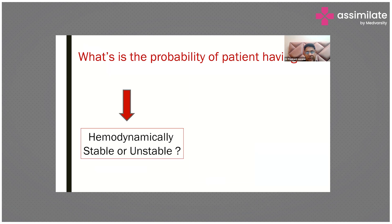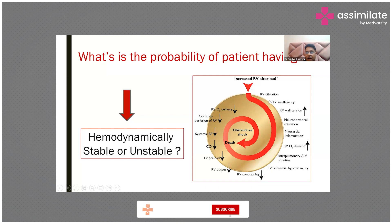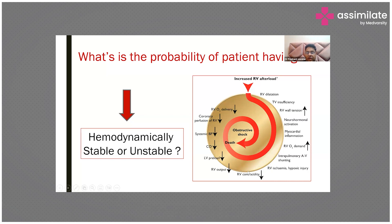If you look at this diagram, once there is an embolism or clot in the pulmonary artery, there is increased right ventricular afterload, which leads to right ventricular dilatation, right ventricular ischemia, decreased right ventricular contractility, and reduced output. Left ventricular preload is affected, cardiac output is reduced, blood pressure drops, coronary artery perfusion is reduced, and oxygen delivery is reduced. This cycle continues until the patient develops obstructive shock, and if untreated, the patient may die. It is very important to recognize PE early, as a major pulmonary embolism can lead to death within a few hours.